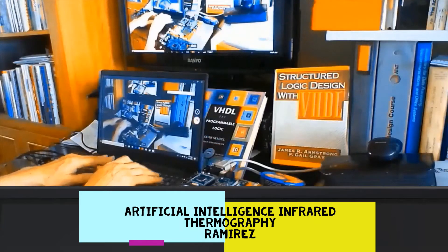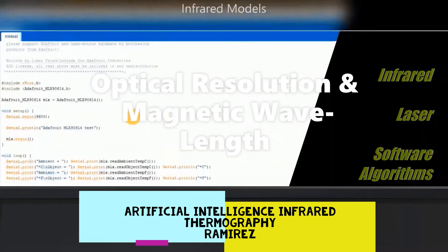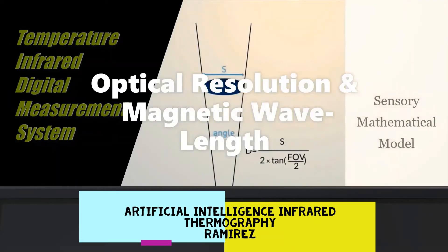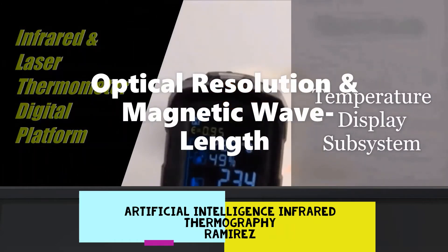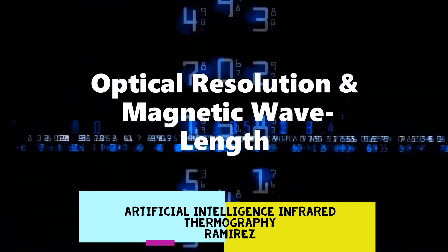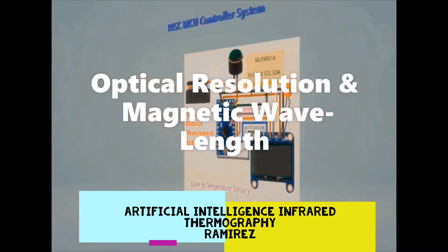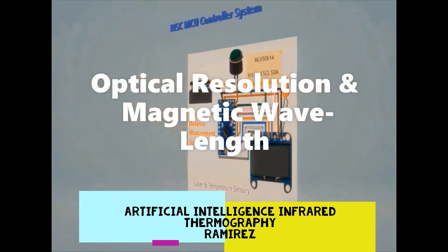The optical system of the infrared thermometer collects energy from a circular measurement spot and focuses on the detector. The optical resolution is defined as the ratio of the distance from the infrared thermometer system to the object to the size of the measured spot. The larger the ratio, the better the resolution of the infrared thermometer, and the smaller the spot size to be measured.